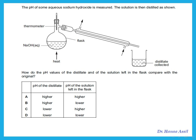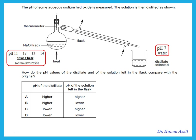The pH of some aqueous sodium hydroxide is measured, and the solution is then distilled. How do the pH values of the distillate and the solution left in the flask compare with the original? Sodium hydroxide is a strong base, so the original solution has pH 11, 12, 13, or 14. The distillate that comes out is pure water, so it has pH 7 — lower than the original. After removing water, the solution in the flask becomes more concentrated, so its pH increases — for example, from 11 up to 13 or 14.